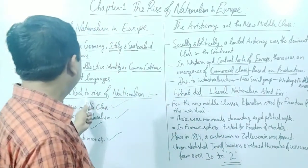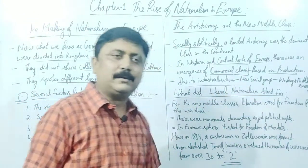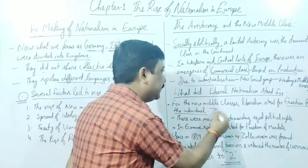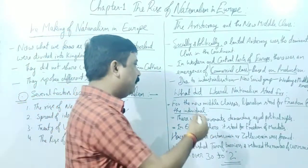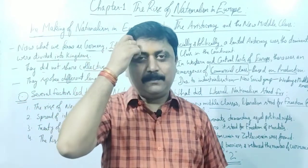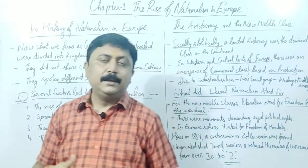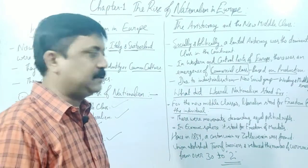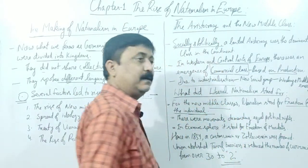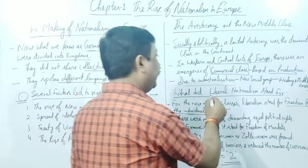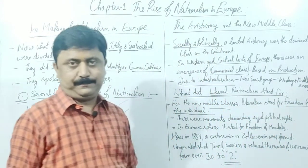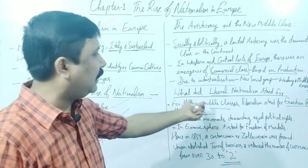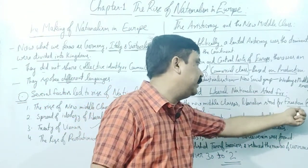Liberal Nationalism stood for individual freedom — Vyaktigat Swatantrata. Until now, the concept of individual freedom had not existed anywhere; it had only slightly emerged after the French Revolution. So Liberal Nationalism stood for freedom of the individual. This is also today's comment box question: 'What did Liberal Nationalism stand for?' The answer is in the first point itself — Liberalism stood for freedom for the individual.